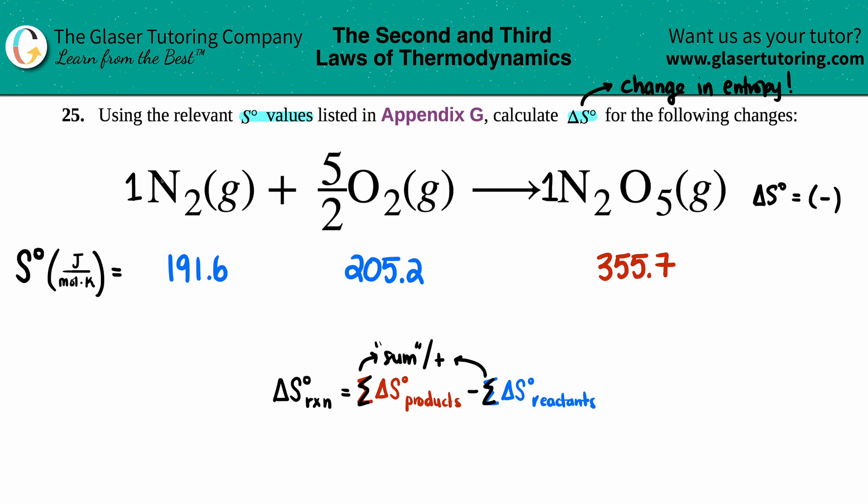Are these numbers going to stay the same or be different? This goes by what you have in your balanced equation. Since I only have one N2, the S value stays the same. But you take your value and multiply it by whatever the coefficient is. For O2, since you have 5/2 O2, I have to take this value and times it by 5/2 or 2.5.